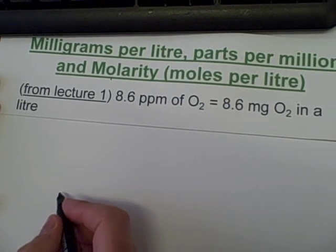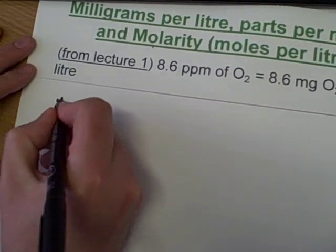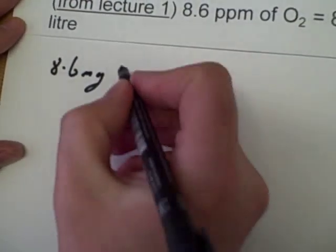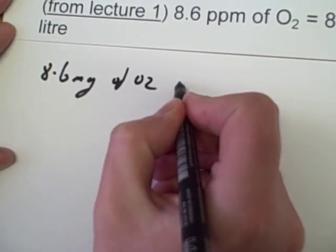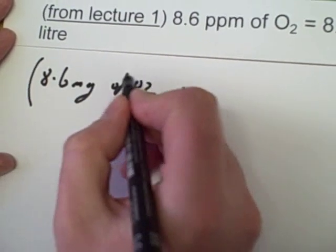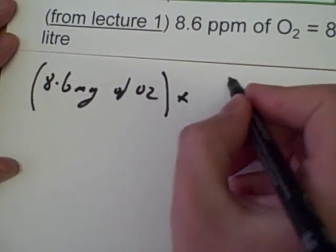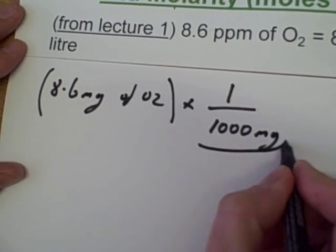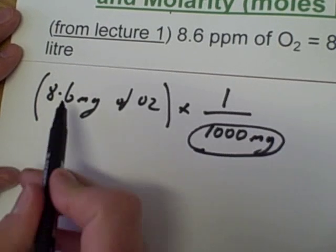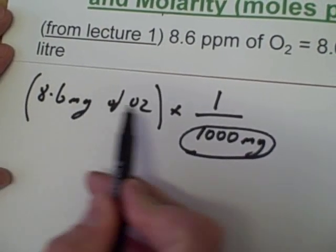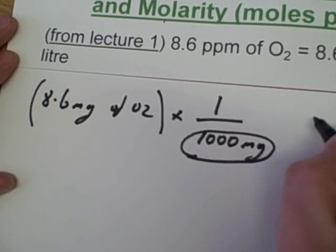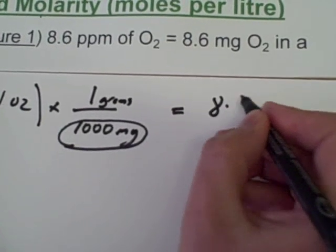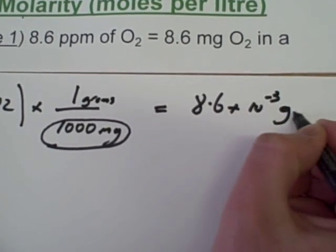To start off with, I'm going to work with milligrams to grams. So, 8.6 milligrams of oxygen — I want to convert milligrams into grams. There are 1,000 milligrams in 1 gram, so if I multiply 8.6 by 1 over 1,000, I will get my answer in grams: 8.6 times 10 to the minus 3 grams.